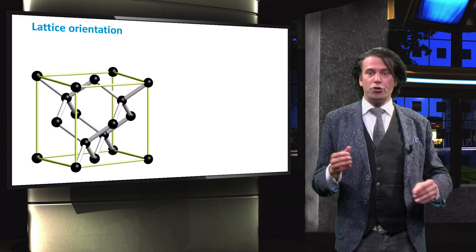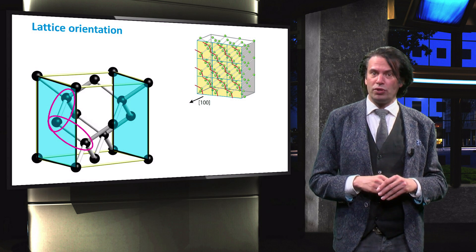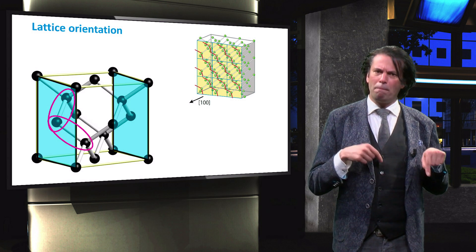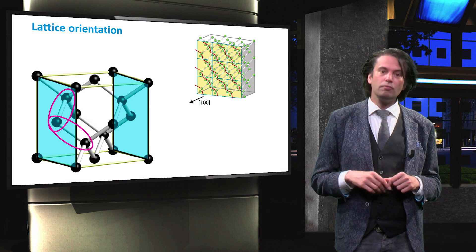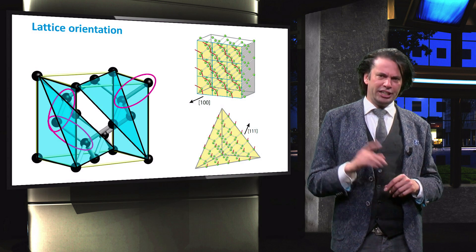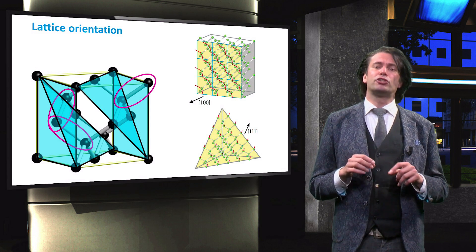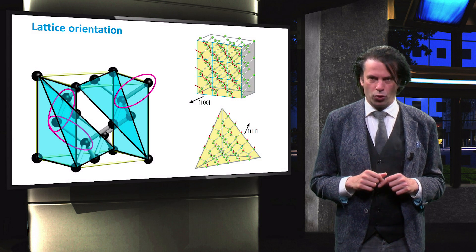Depending on how you cut through the lattice, you could for example end up with the 100 surface where the silicon atom has 2 backbonds and 2 valence electrons pointing to the front. Another possibility is the 111 surface. Here, every silicon atom has 3 backbonds and 1 valence electron pointing towards the plane normal.